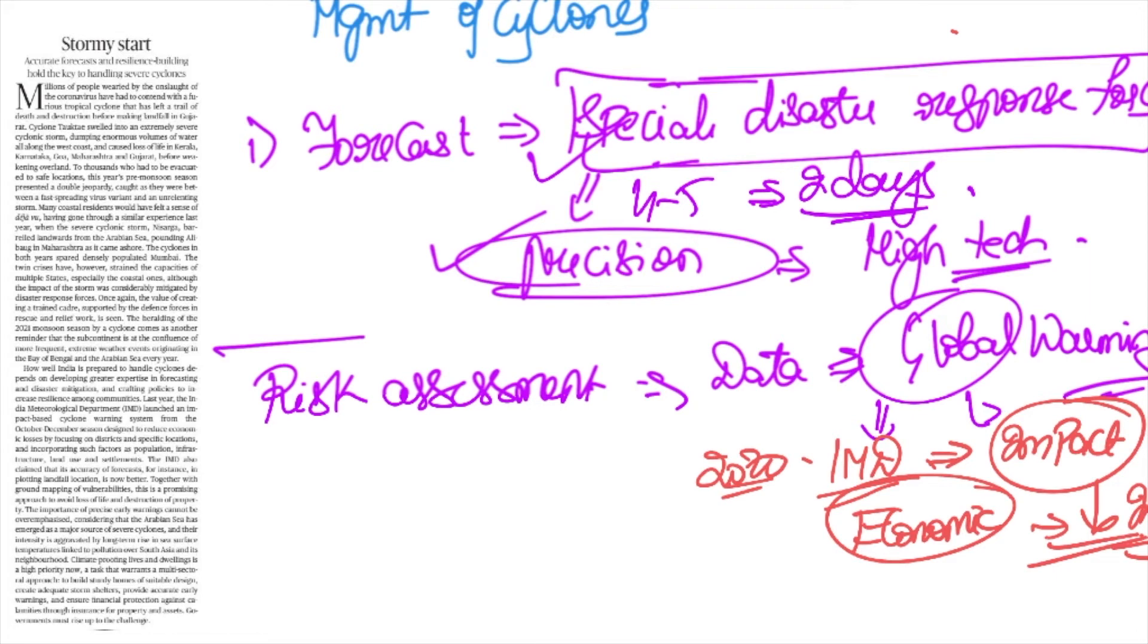Moving forward, we have to not only deal with disaster mitigation, we also have to build resilience because that is probably the biggest cost involved in the future. There should be insurance for properties and assets, and financial protection against calamity should become a normal component of any insurance policy.